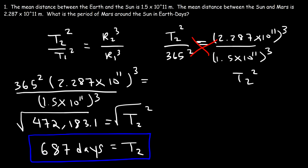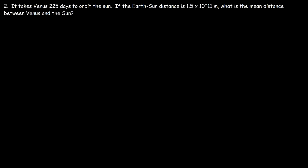One year on Earth is 365 days, and a year is defined as the time it takes for a planet to orbit the Sun. Now let's move on to the next problem.